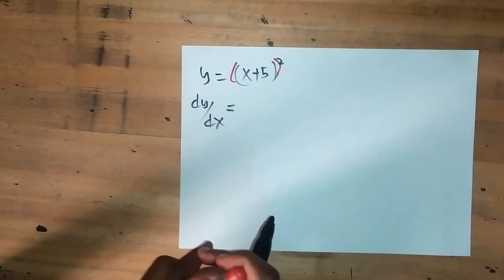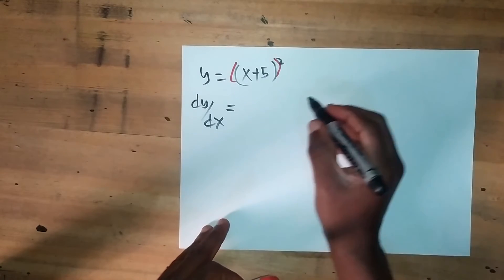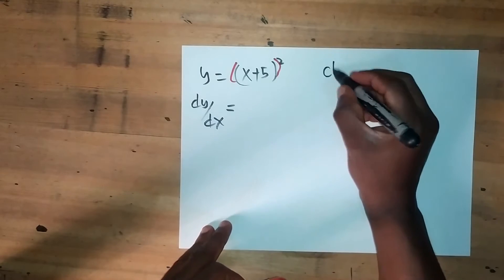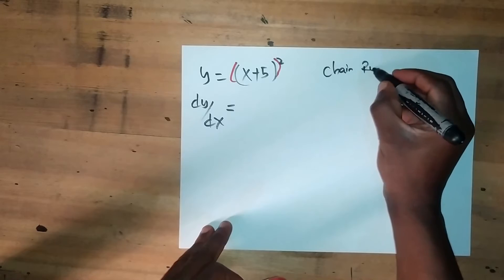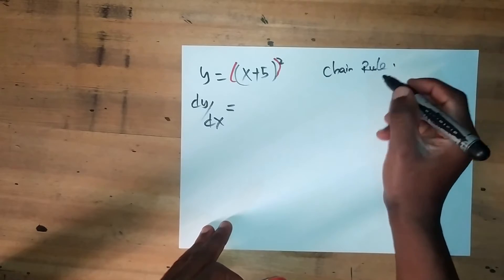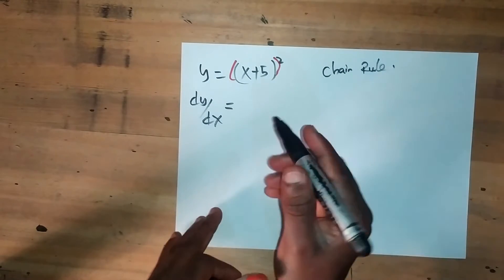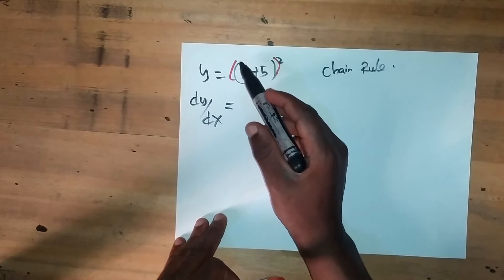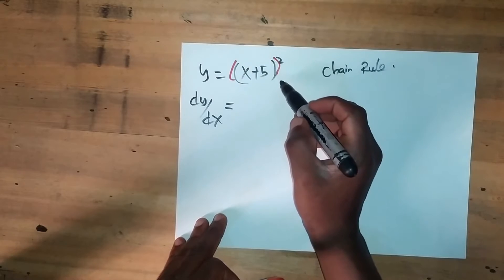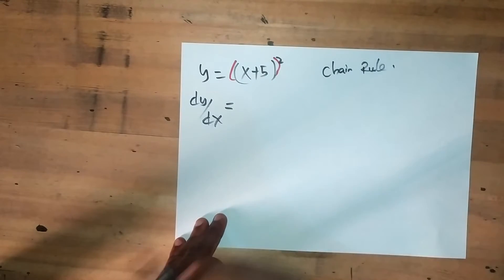To differentiate the composite function, we will use the chain rule. The main idea behind the chain rule is that we find the derivative of the outer function multiplied by the derivative of the inner function.